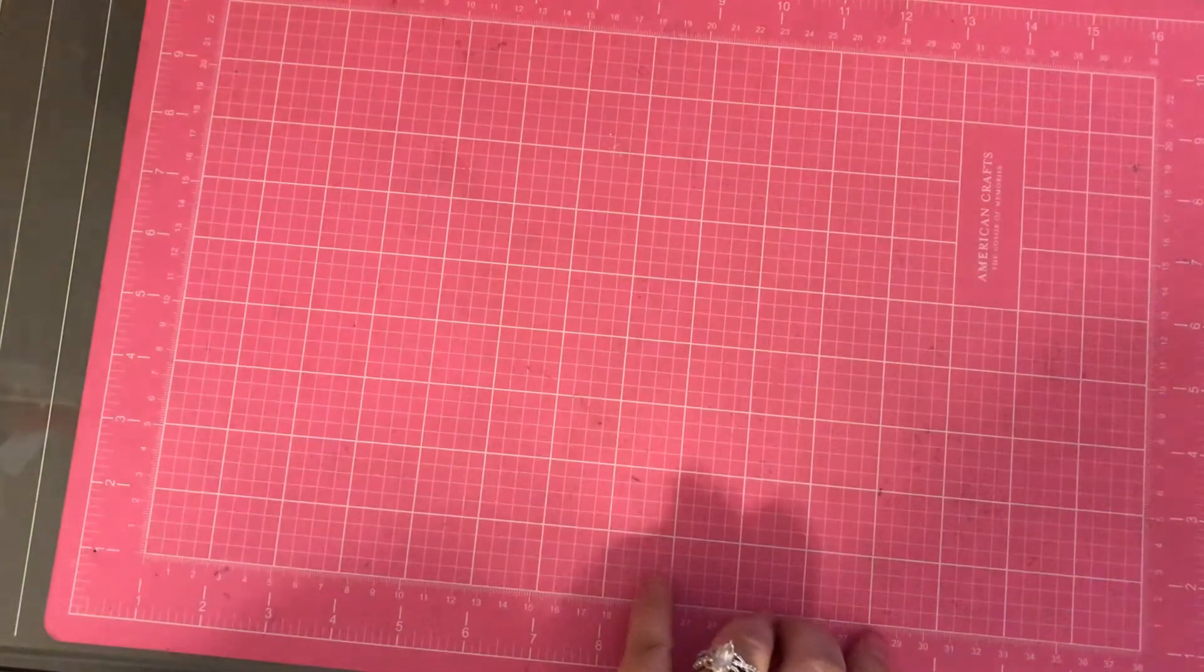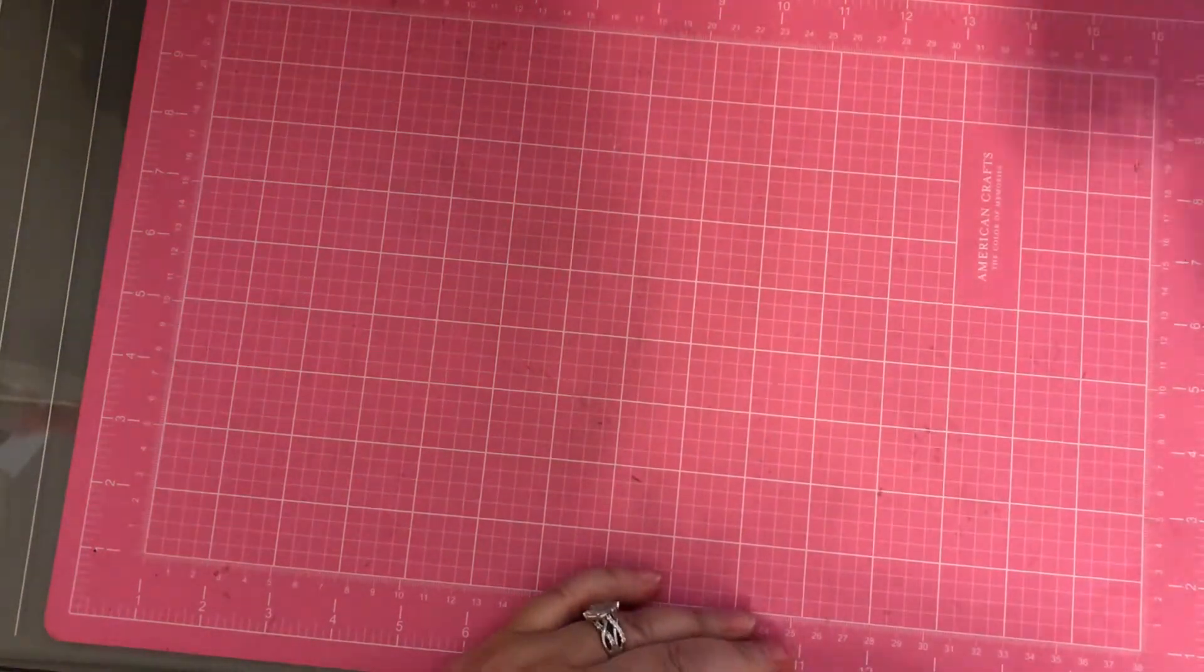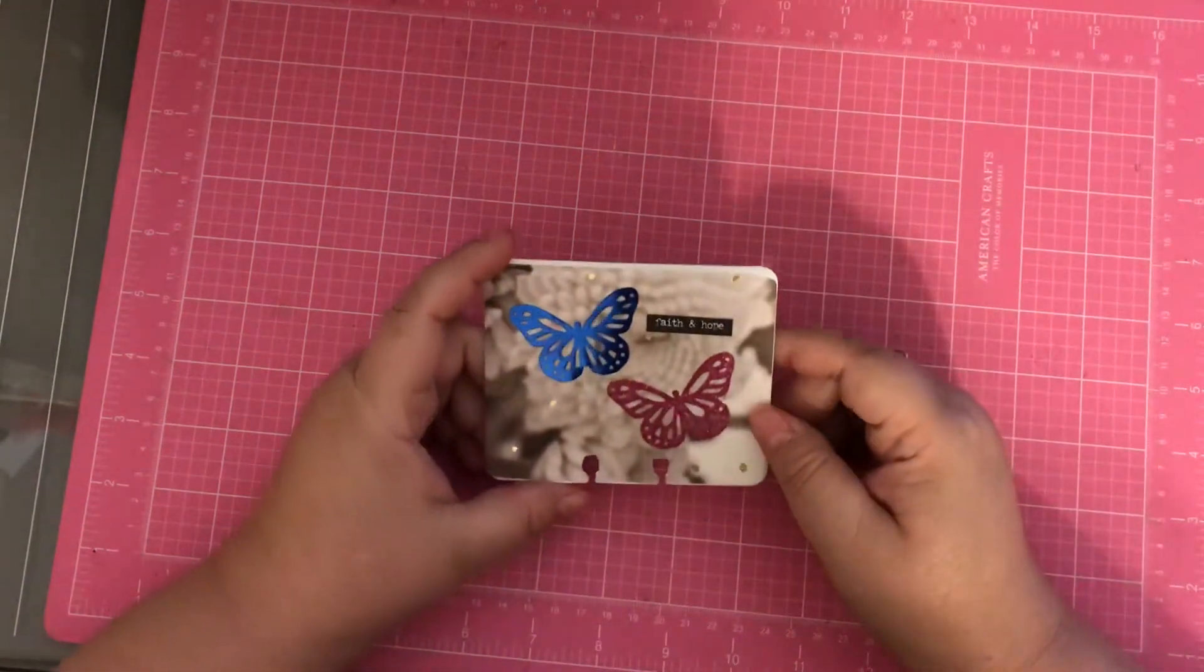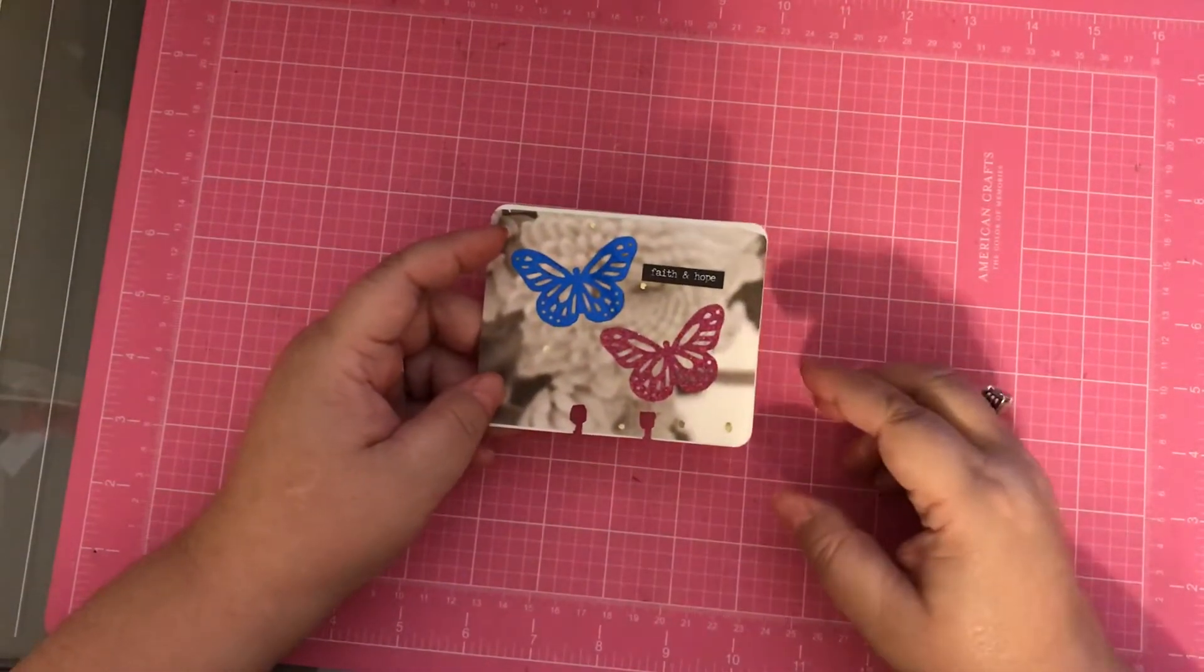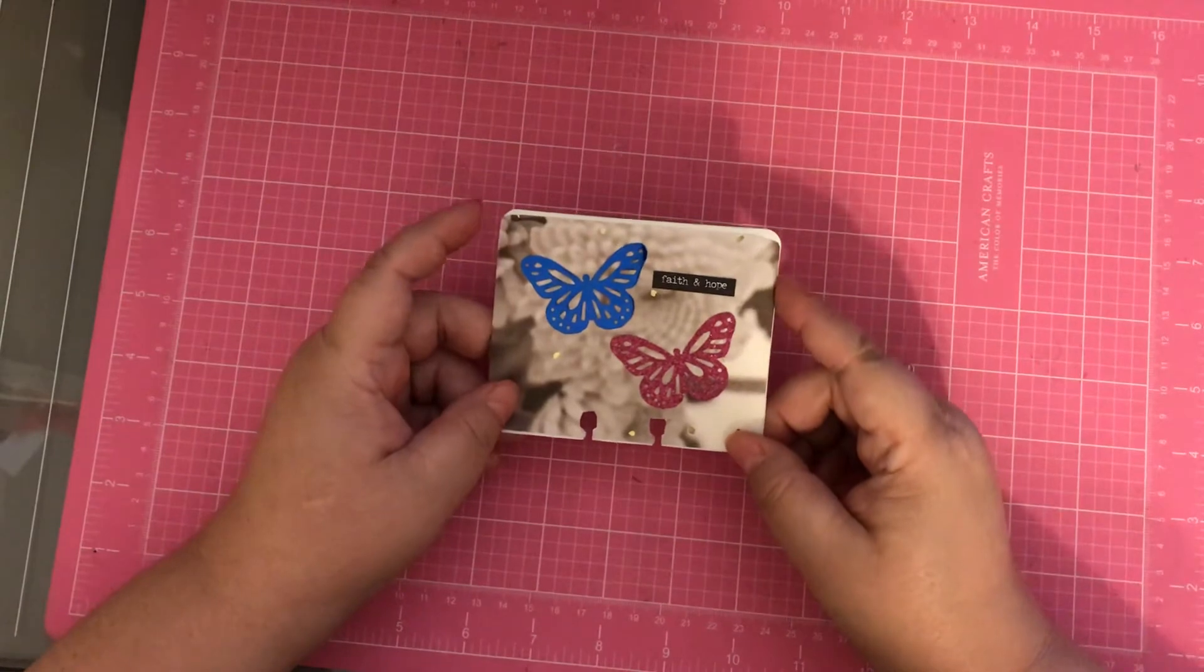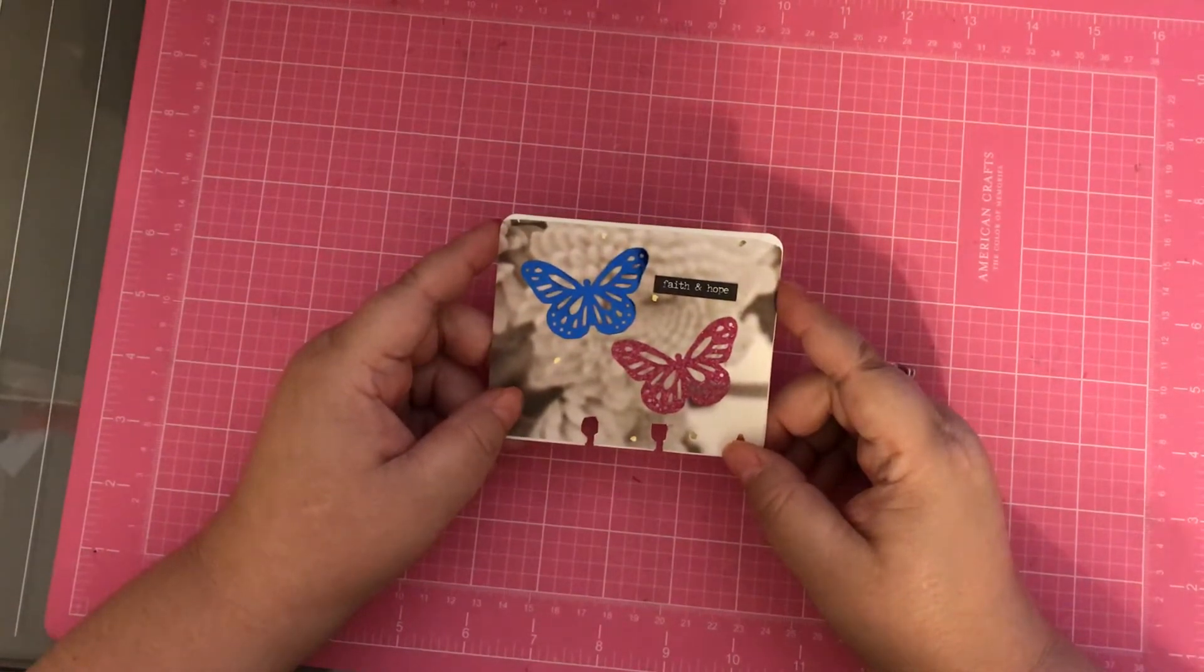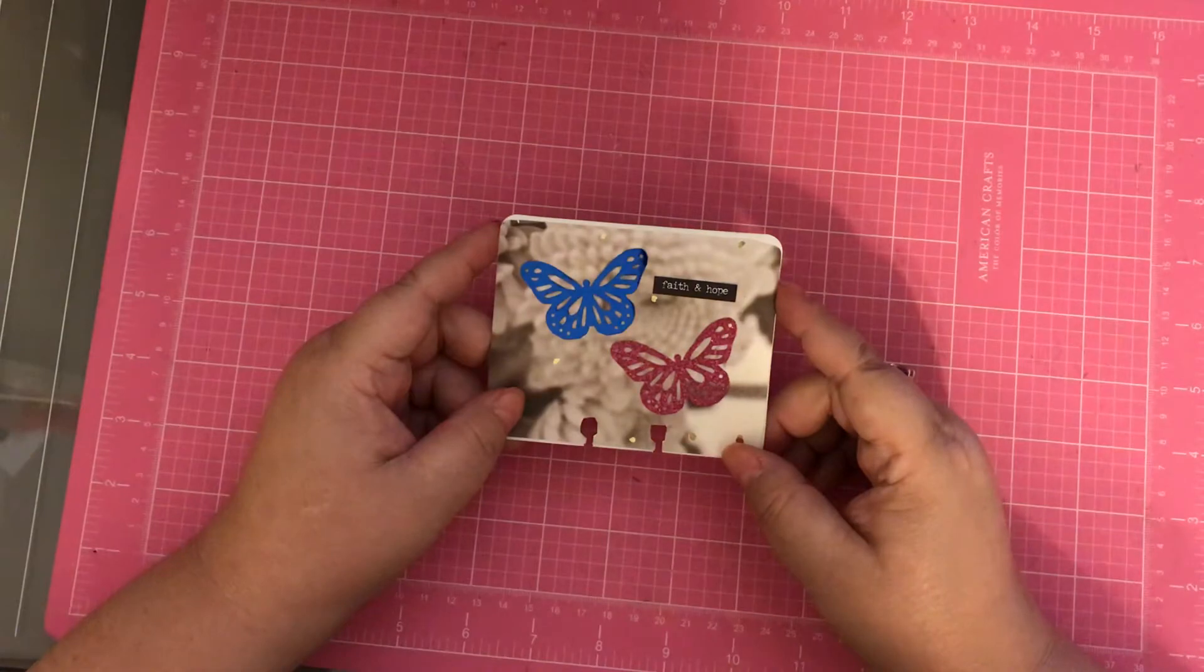The second thing that I made is this card. I made it for a challenge - it's a file folder. I made it for Judy, I can't remember what her last name is. I wrote it down - Judy Evans Parker.